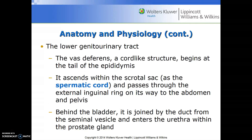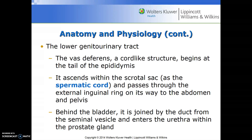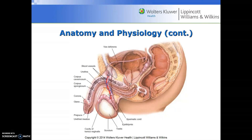The vas deferens is a cord-like structure that begins at the tail of the epididymis. It ascends within the scrotal sac as the spermatic cord and passes through the external inguinal ring on its way to the abdomen and pelvis. Behind the bladder, it is joined by the duct from the seminal vesicle and enters the urethra within the prostate gland. You have an opportunity to look at this illustration to identify these anatomical parts.